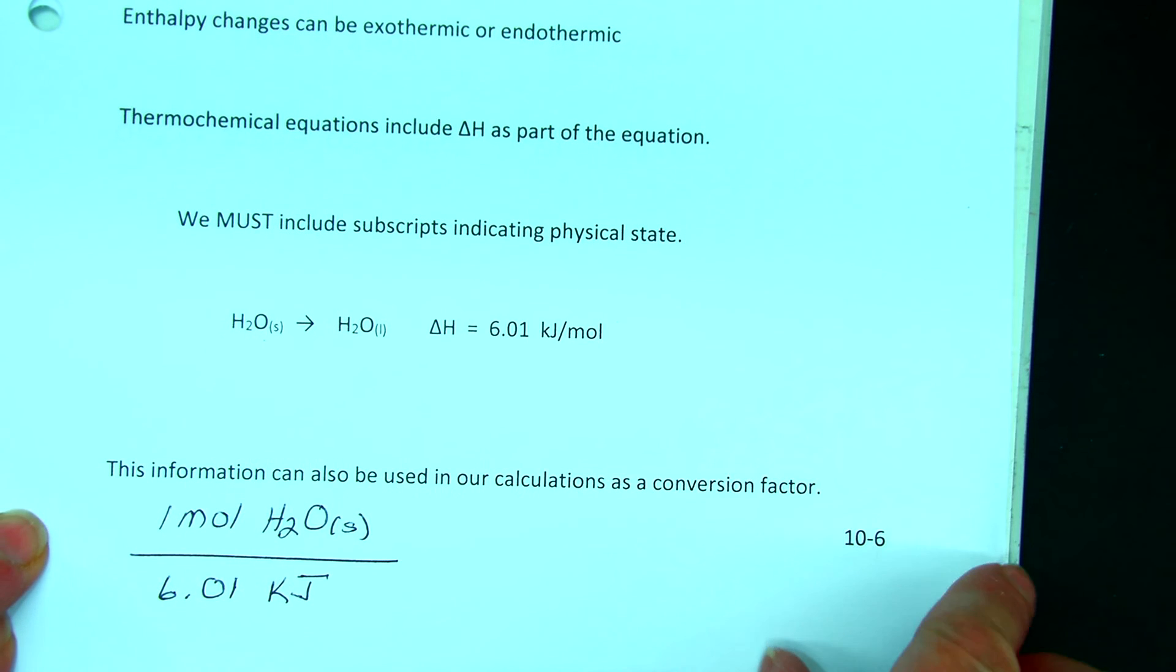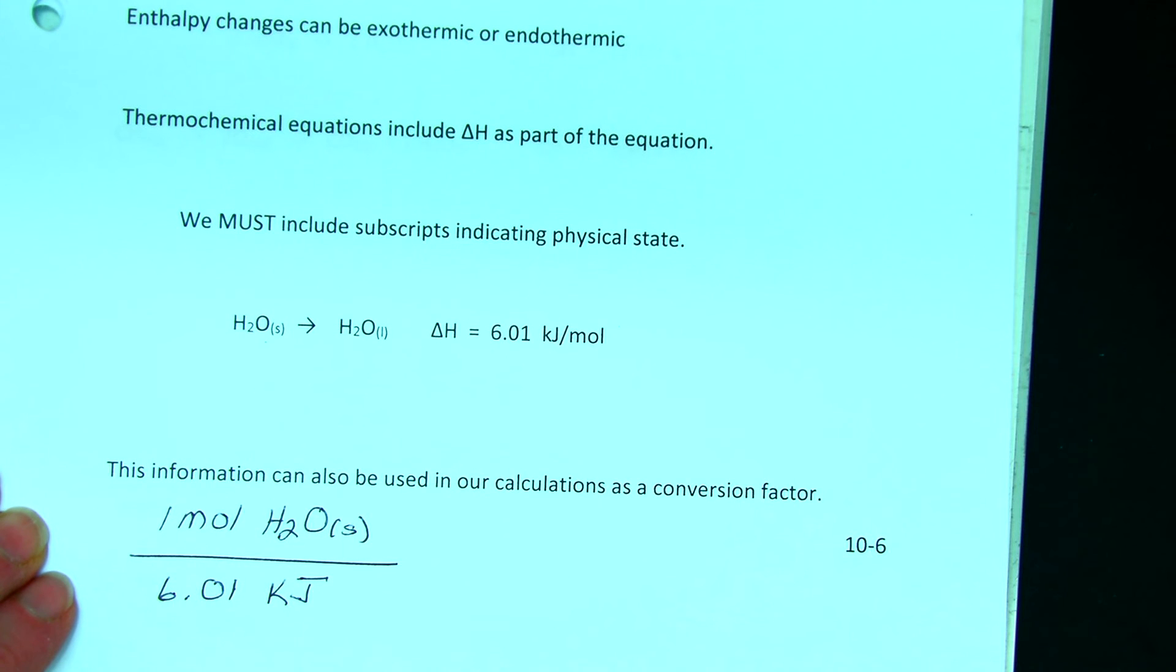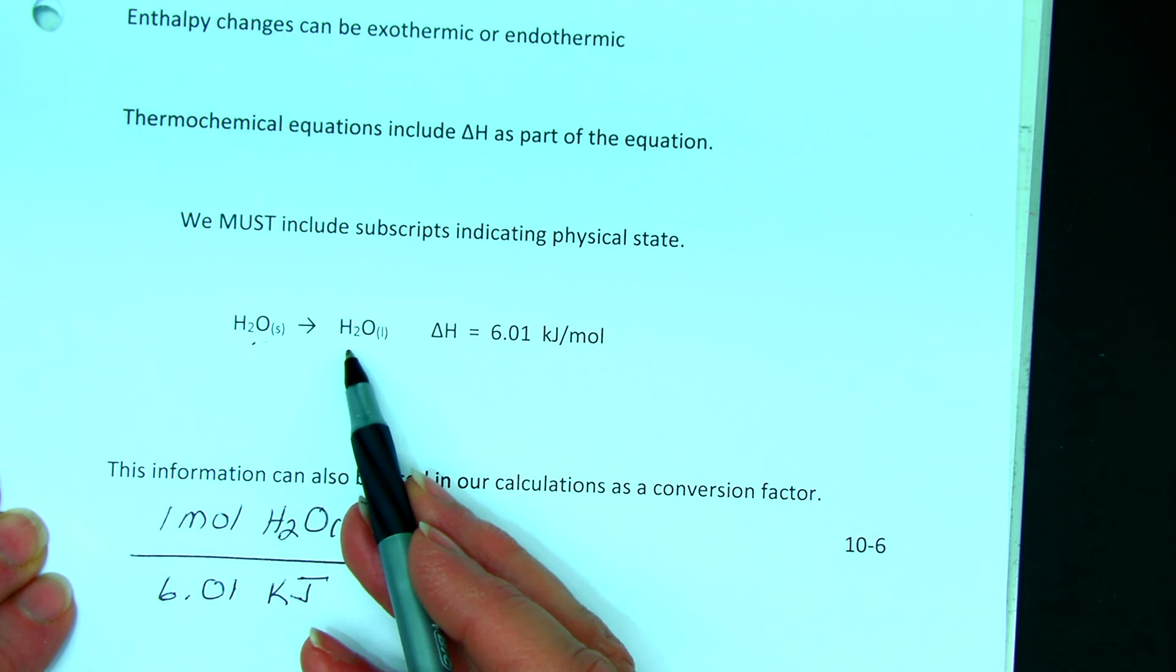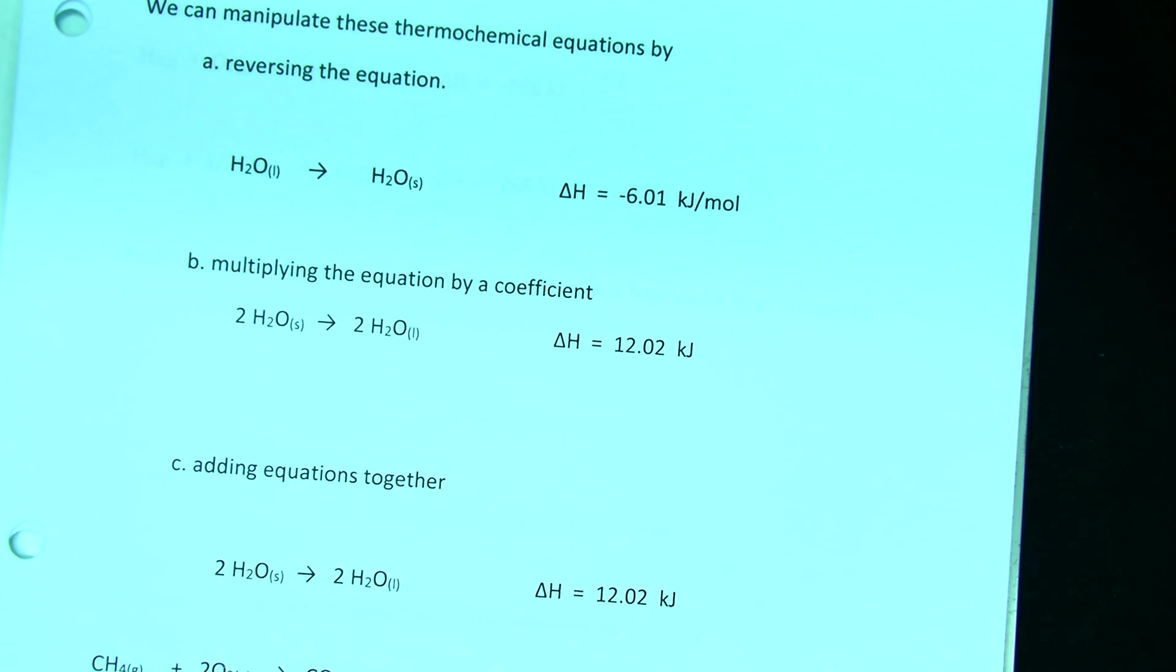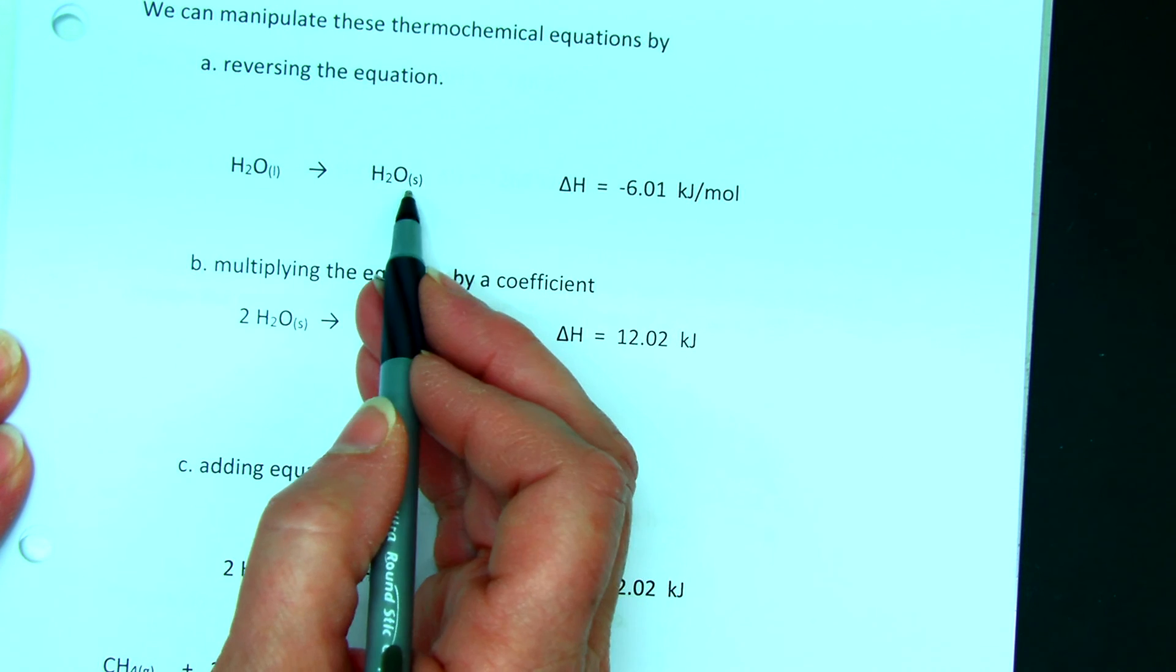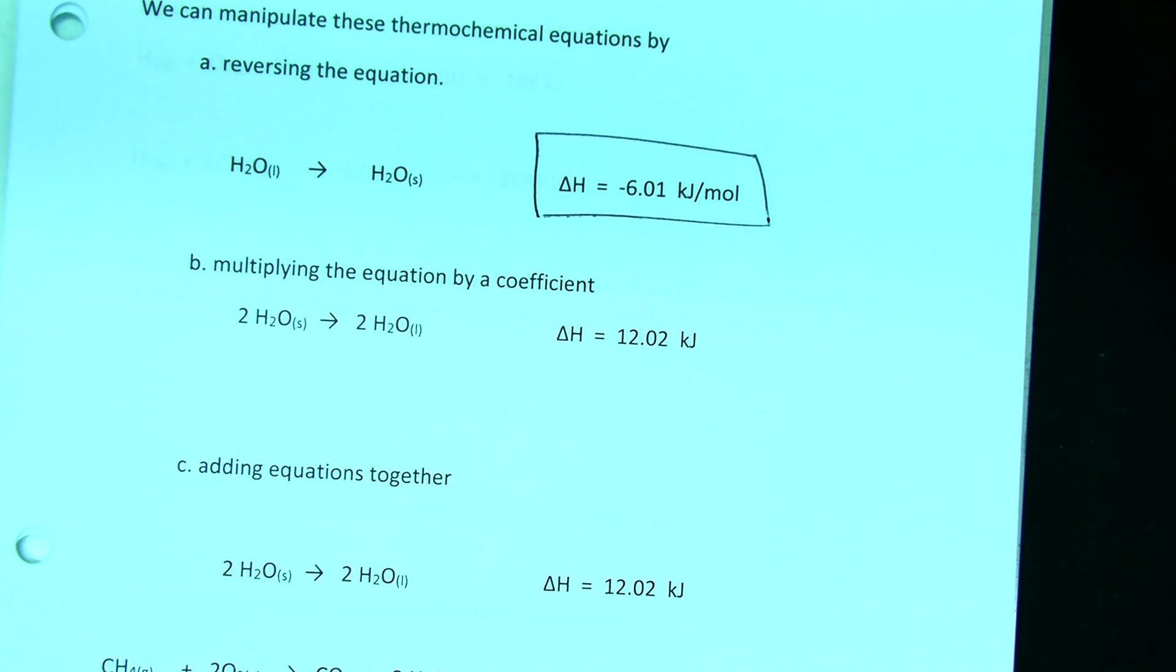Another thing that we can do is to take these thermochemical equations, and we can start to manipulate them. If we take water solid, ice, and we melt it, it takes energy to melt it. So I could manipulate this equation by reversing the equation. Instead of taking solid water to liquid water, now I'm taking liquid to solid, and I've changed the sign of the delta H. If it takes 6 kilojoules to melt a mole of ice, then I release 6 kilojoules when I freeze a mole. Does that make sense?